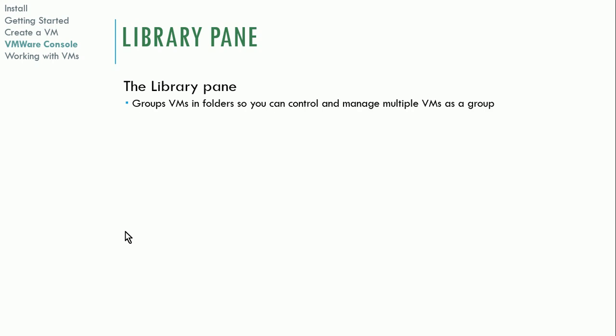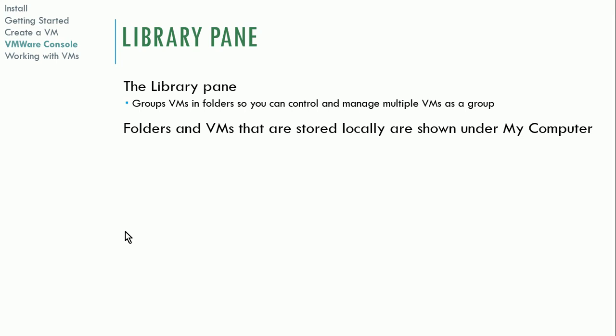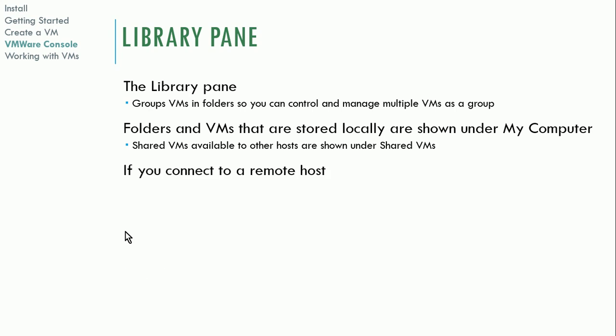In the library pane on the left-hand side, you'll see groups of VMs and folders, allowing you to control and manage multiple VMs as a group. A nice feature in VMware that you can't do with VirtualBox is connecting to a remote host with the console — you can have VMware running on a different computer and connect your console to control it. This kind of emulates what you can do with vSphere in the data center, and could be useful for a small IT department running a few servers.